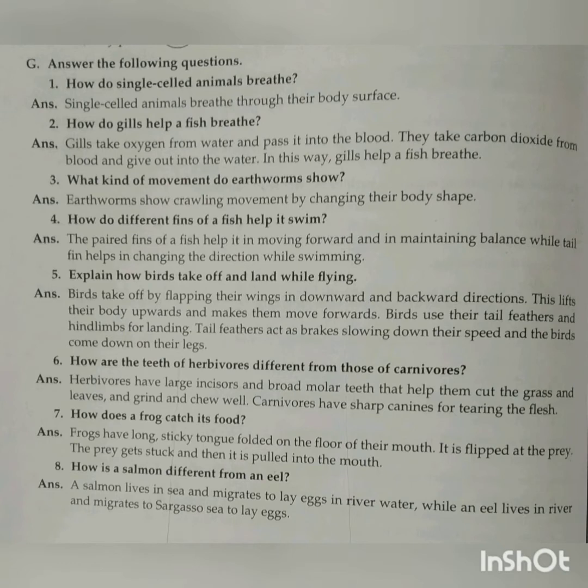in changing the direction while swimming. Question number five: explain how birds take off and land while flying. Birds take off by flapping their wings in downward and backward directions. This lifts their body upward and makes them move forward. Birds use their tail feathers and hind limbs for landing.